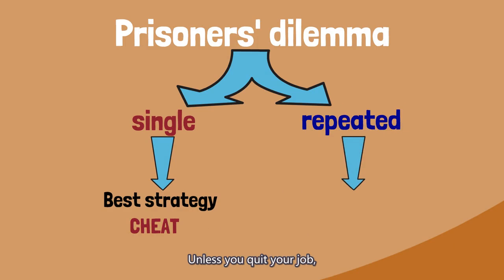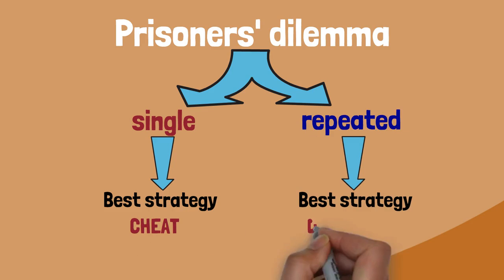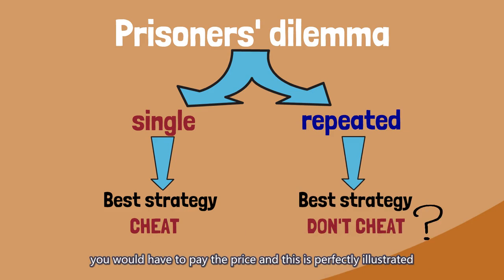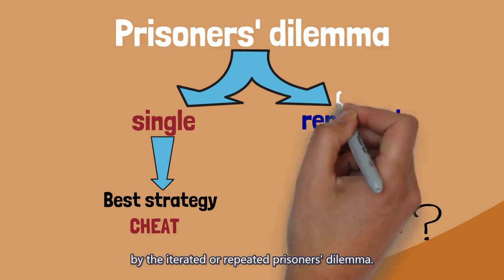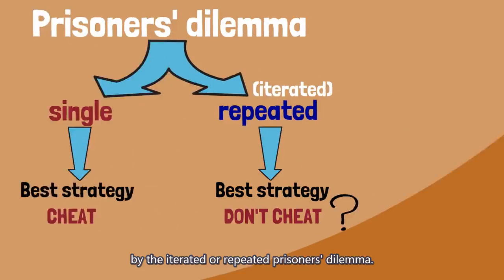Unless you quit your job, you have to play the game of office politics multiple times. By cheating at every opportunity, one day you would have to pay the price, and this is perfectly illustrated by the iterated or repeated prisoner's dilemma.